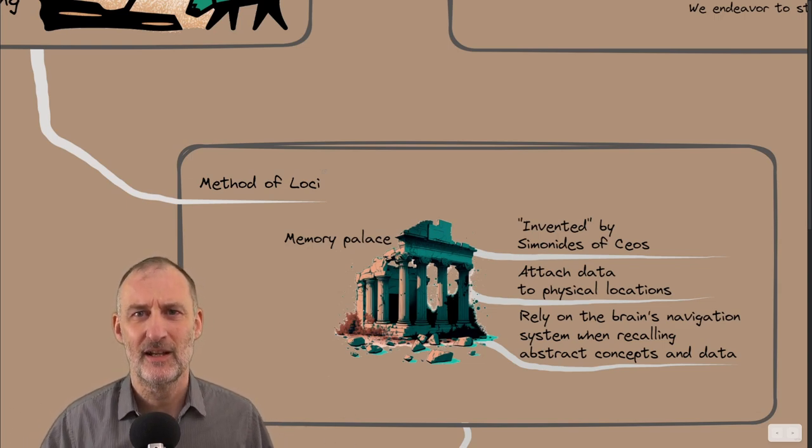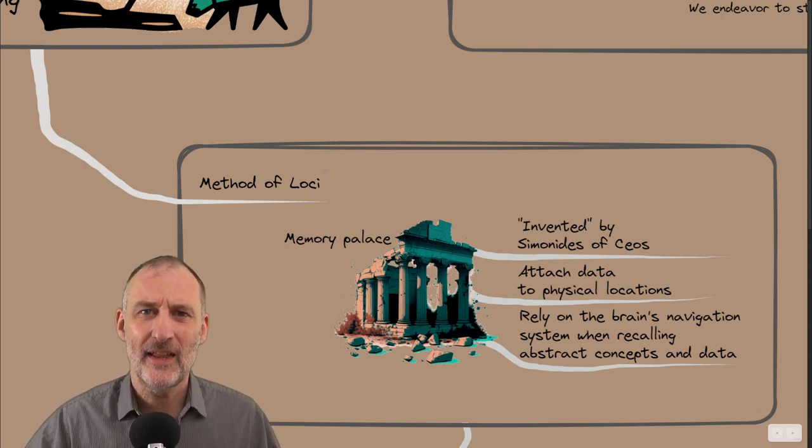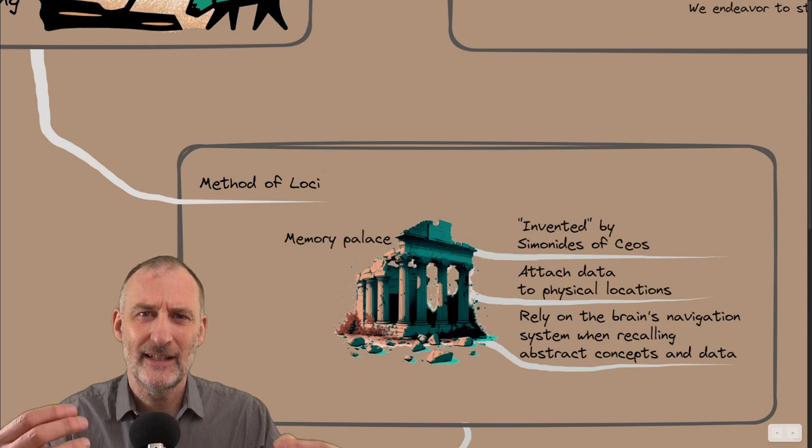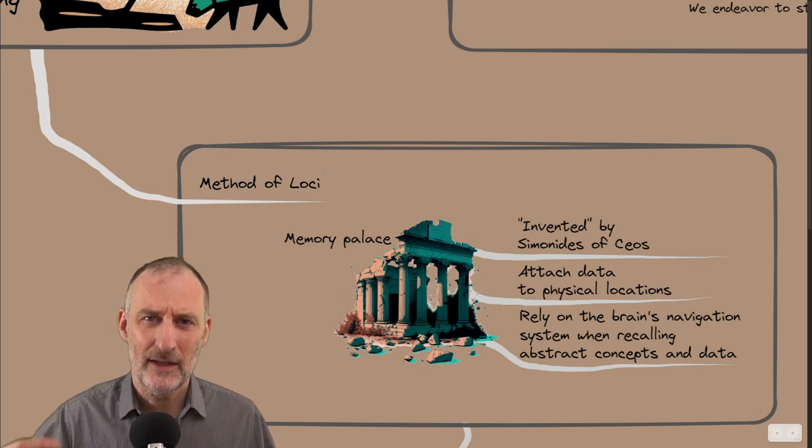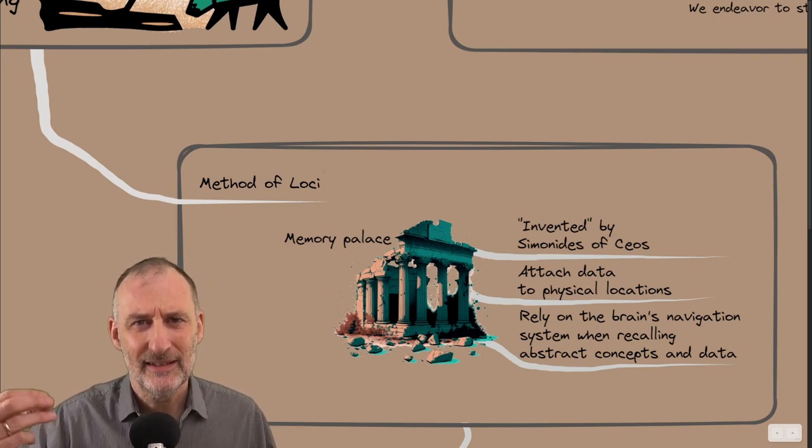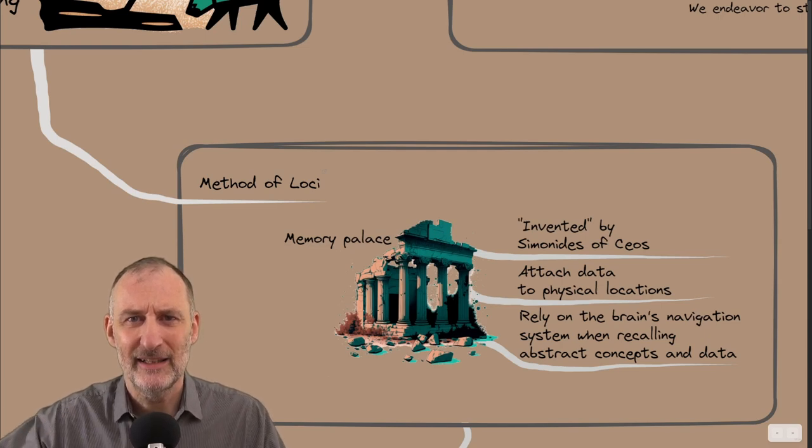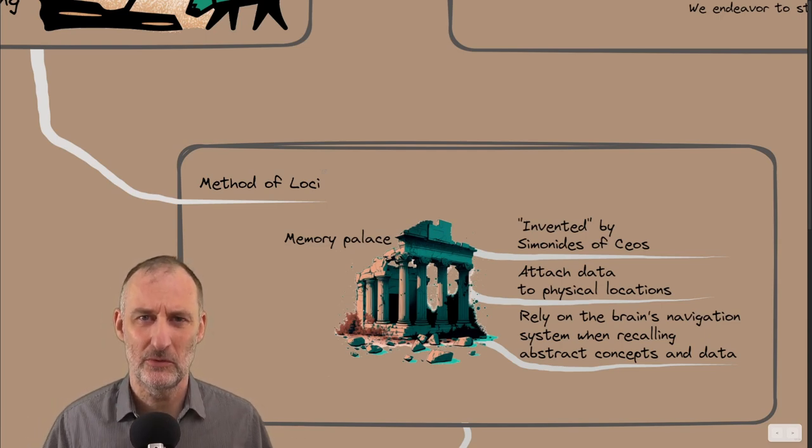And for some reason, Simonides survived, and he was able to identify the bodies of the people who were killed in the accident by remembering who was sitting where, and using this memory, he was able to identify each of the people in the ruins.